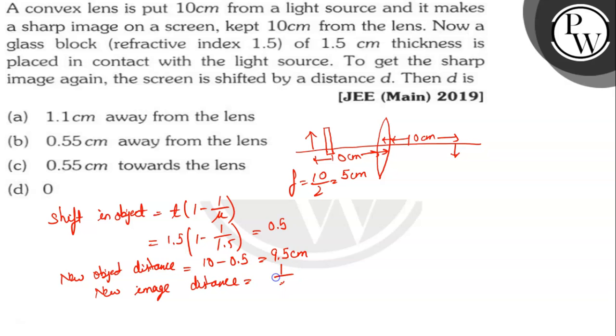1/f equals 1/v minus 1/u, so we will use 1/v = 1/5 minus 1/9.5, so we get 10.55 cm and v = 10.55 cm. This is our new image.